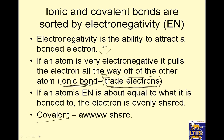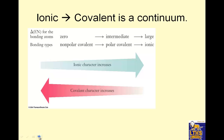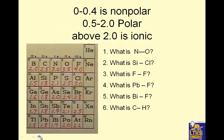Co means share and valence means you're sharing your outermost electron. Ionic to covalent is a continuum. 0 to 0.4 is nonpolar, 0.5 to 2.0 is polar, above 2.0 is ionic. What's N to O?